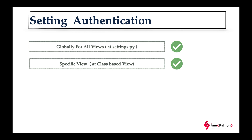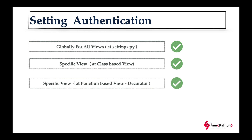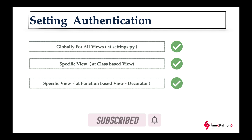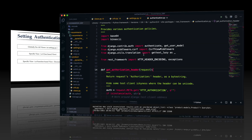At the global level, you configure authentication once in settings.py and it applies everywhere. At the class-based view level, you set it inside a specific APIView class. For function-based views, you use decorators. If you want authentication applied to all views, use the global level. If you only want it for specific endpoint URLs, use class-based or function-based view level instead.